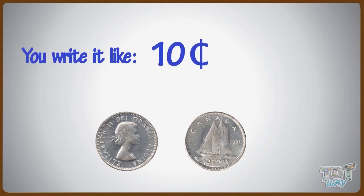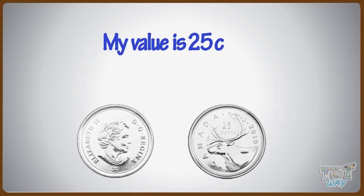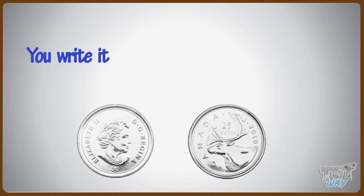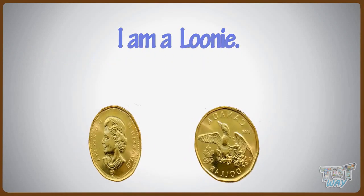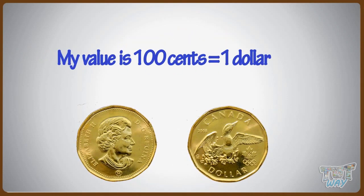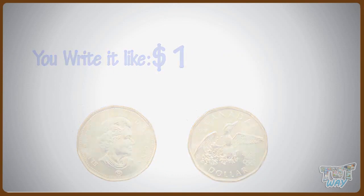I am a quarter. My value is twenty-five cents. You write it like this. I am a loonie. My value is one hundred cents, which is equal to one dollar. You write it like this.